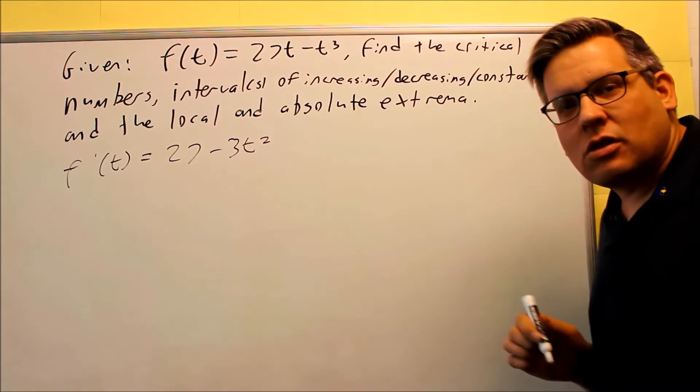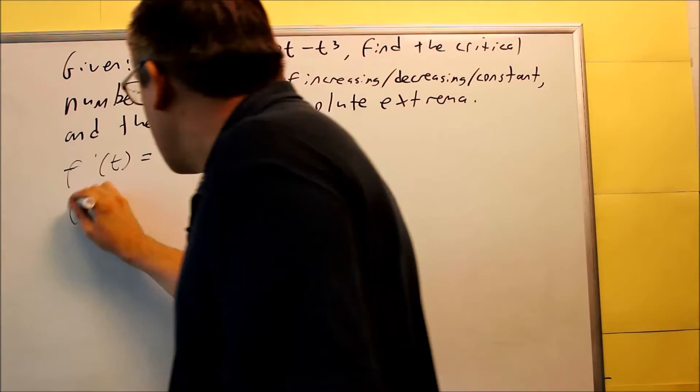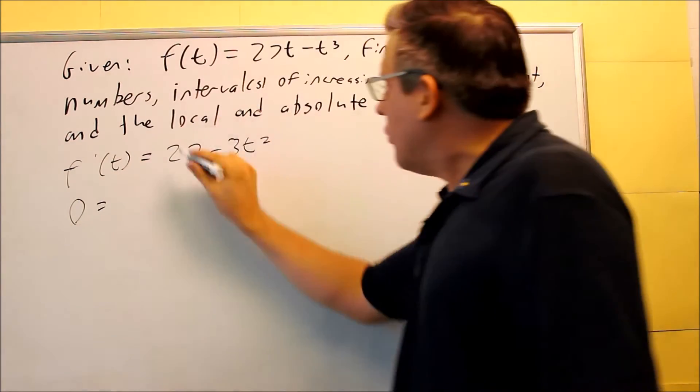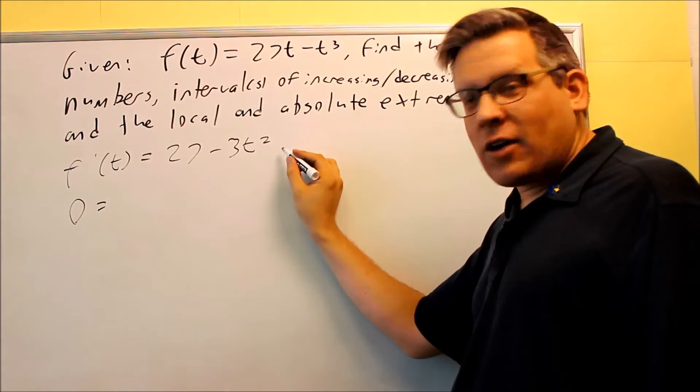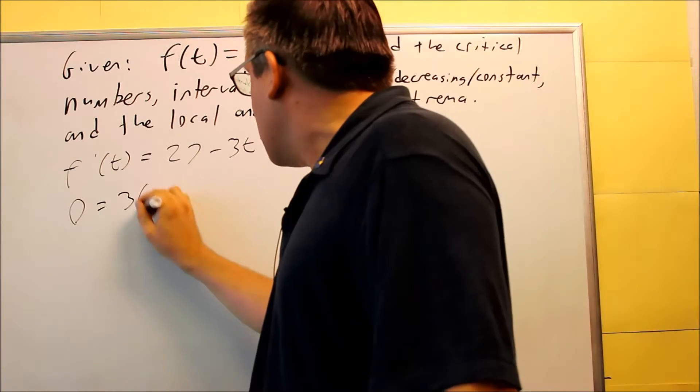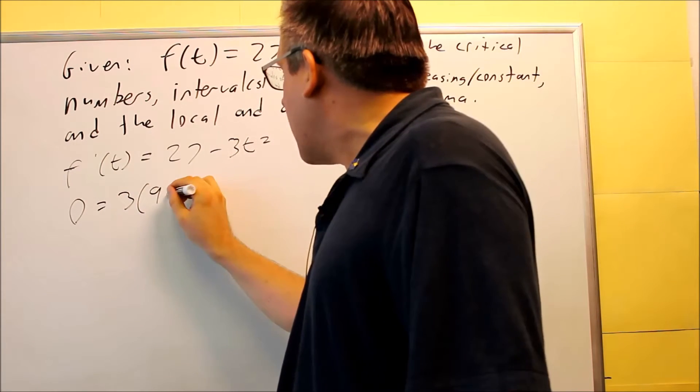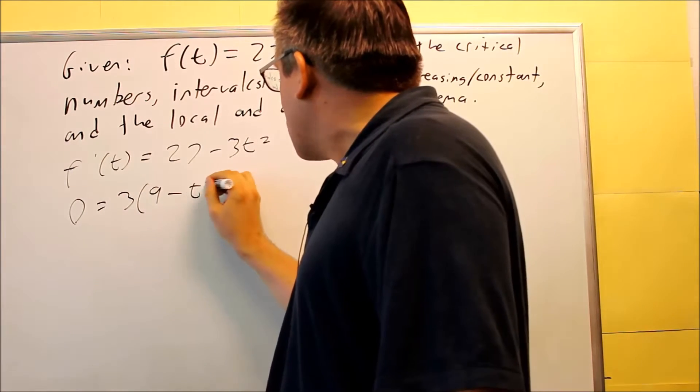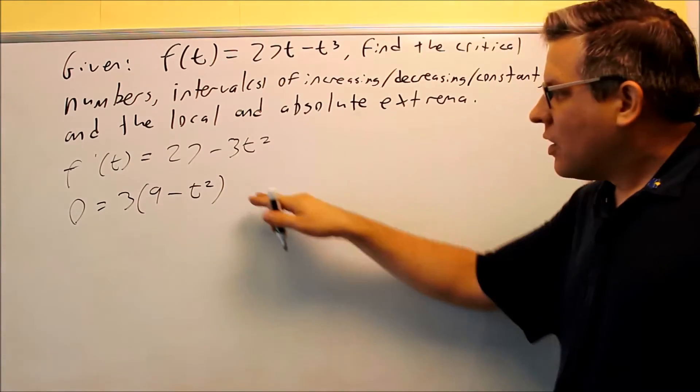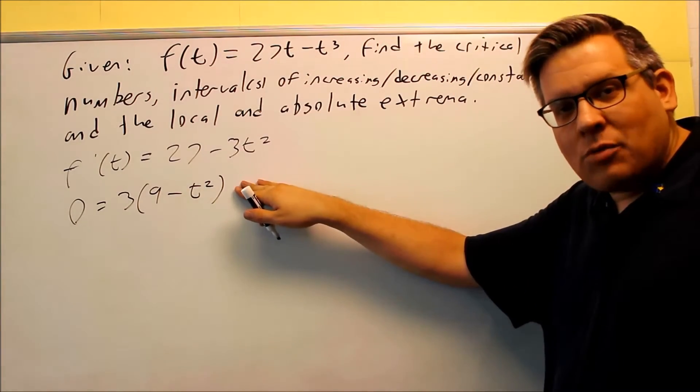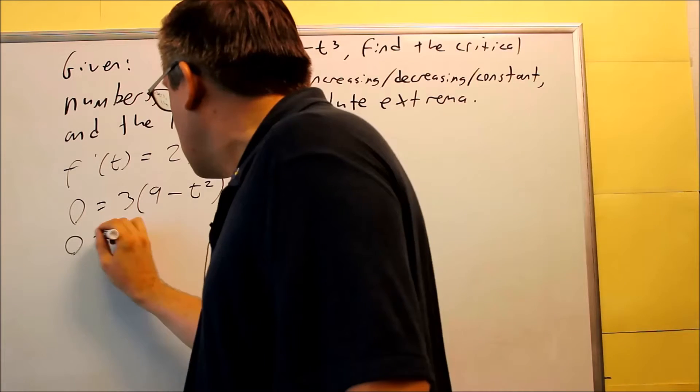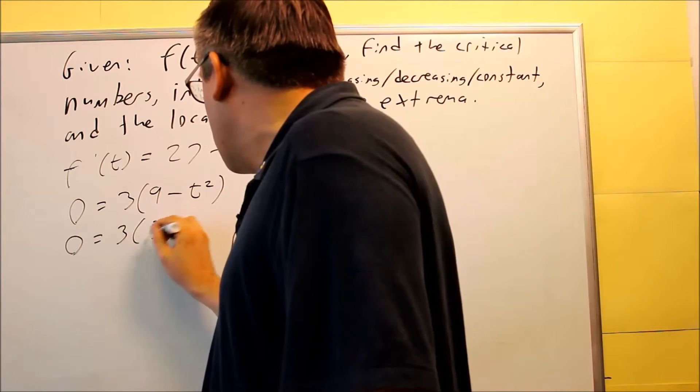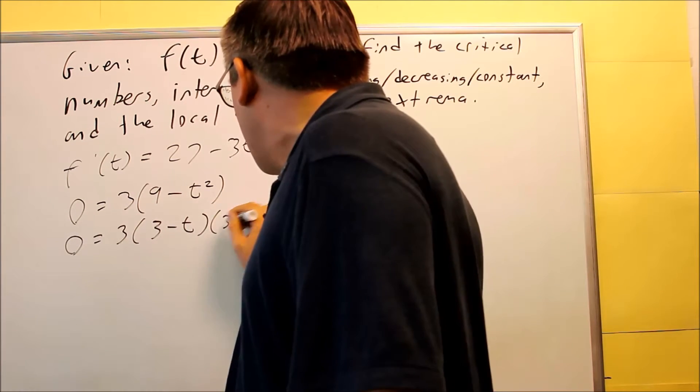The second way is we set this equal to 0. So 0 equals this part right here. We're going to factor that. You can take a 3 out and we get 9 minus t² left over. And then this can be factored one more time because of the difference of squares. So we have 3 minus t, 3 plus t.